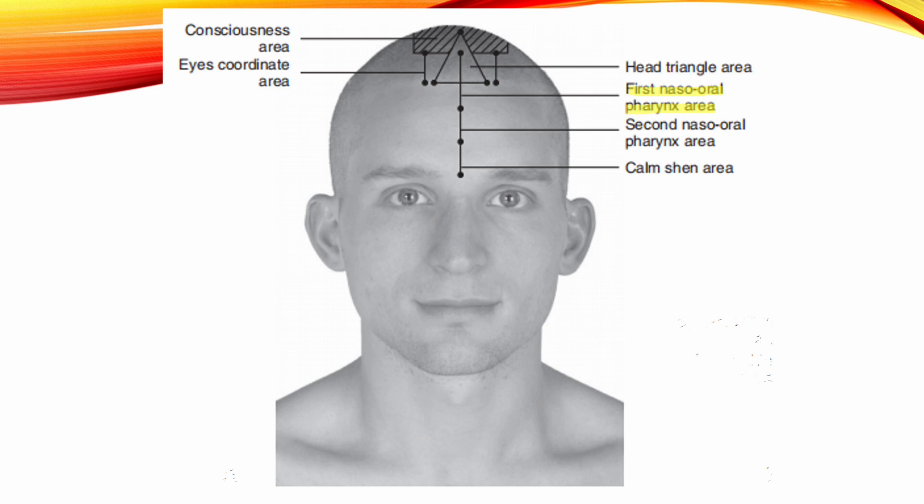First Naso-Oral Pharynx Area. Location: 2 cm anterior and posterior from the anterior hairline along the anterior-posterior midline. Indication: Respiratory infections.